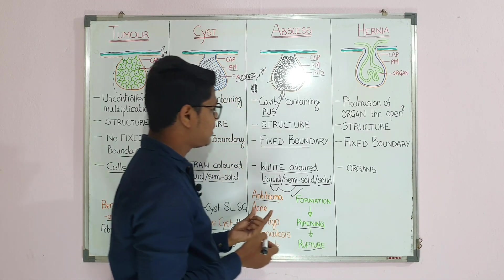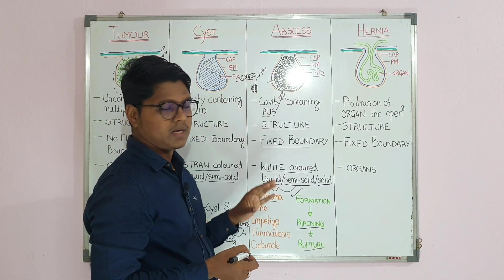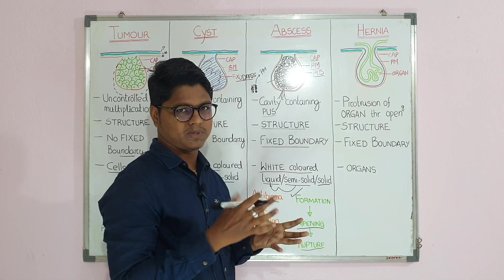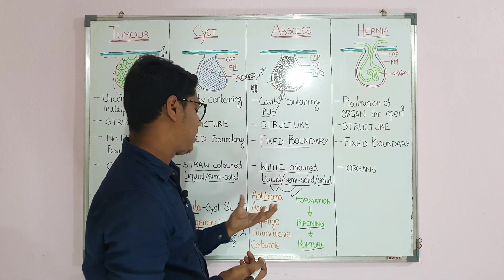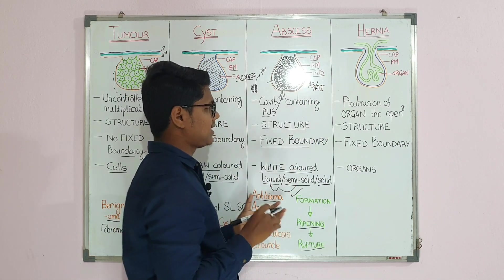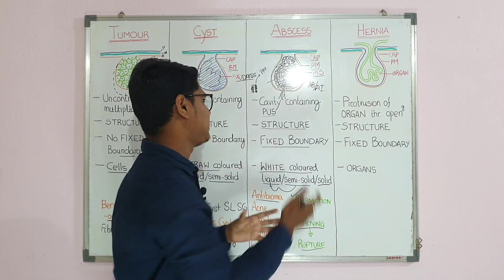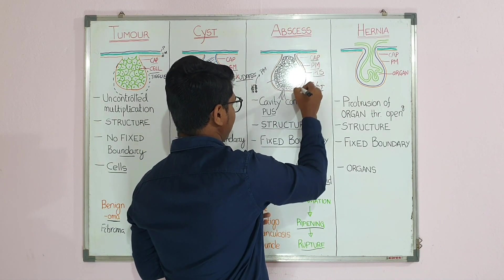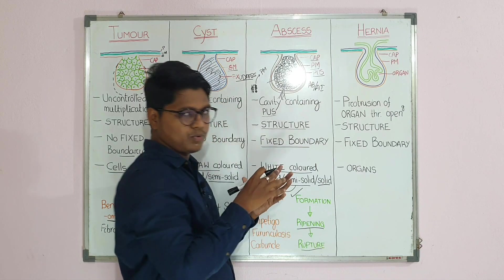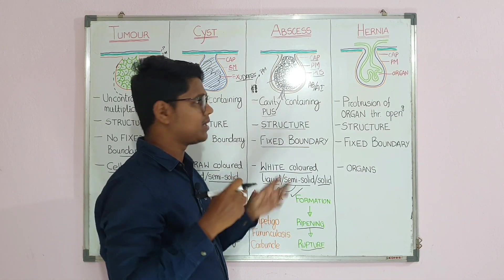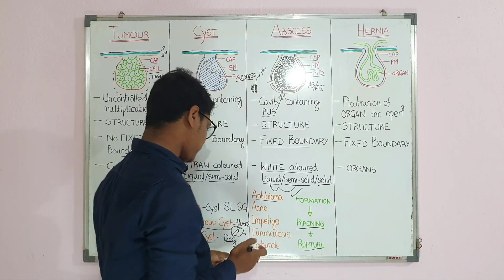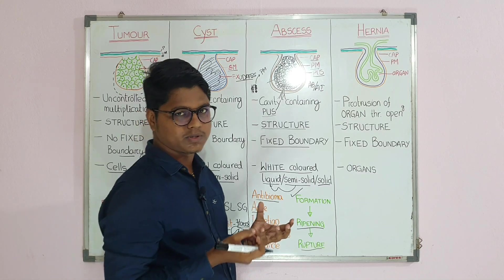A short question: what is antibioma? Suppose you did not diagnose an abscess correctly and treated it as inflammatory swelling with antibiotics and anti-inflammatories for a long period. What will happen is the capsule will become fibrosed in long-standing cases, and the fluid portion of the pus will be completely absorbed, making it very hard. That situation is known as antibioma.